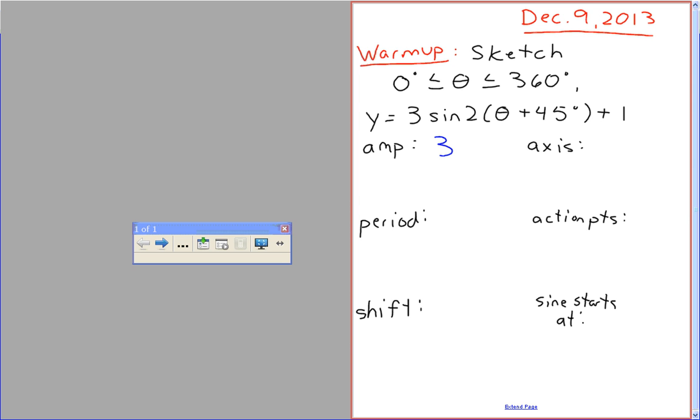Amplitude is 3, very good. And that comes from, again, that's your A value. Aaron, can I get another piece of information please?